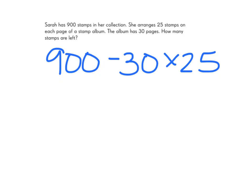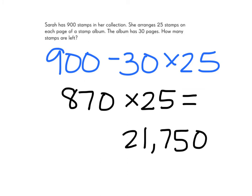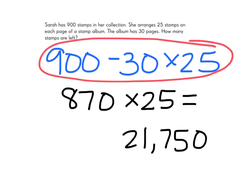What would happen if we didn't follow the My Dear Aunt Sally rule? Let's just work from left to right, ignoring My Dear Aunt Sally, and see what answer we get. If we were to take 900 minus 30, we would get 870 times 25, which would equal 21,750. That doesn't even make sense. If Sarah started with 900 stamps in her collection and she put 25 stamps on each of 30 pages, how can she have more stamps when she's done than she started with? Just a little bit of logic in assessing the word problem and the number expression will help you see if you have followed My Dear Aunt Sally correctly. This answer clearly does not work.